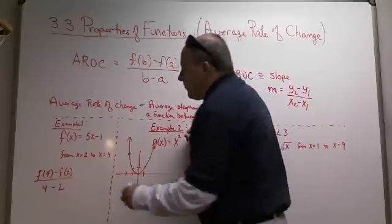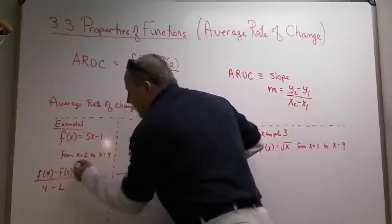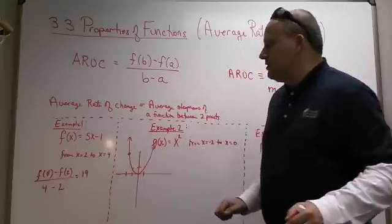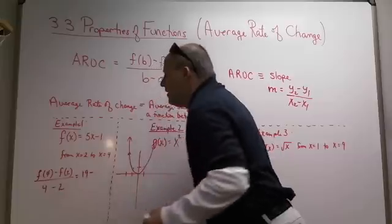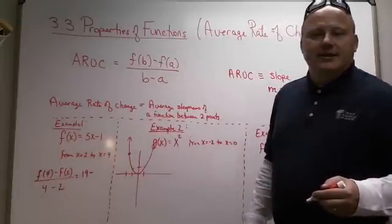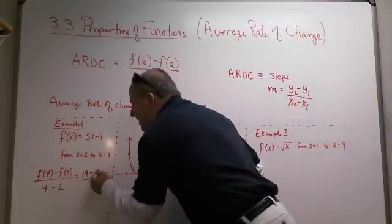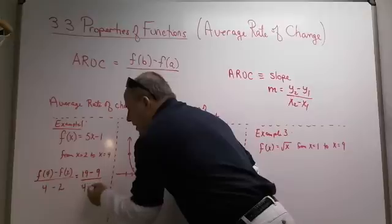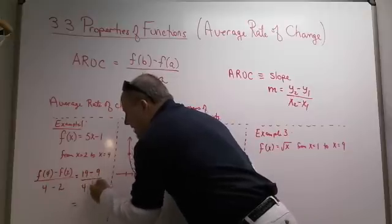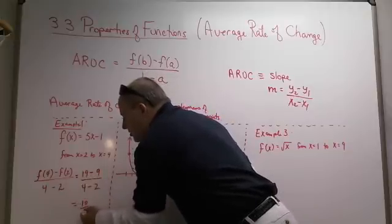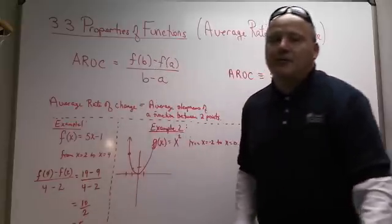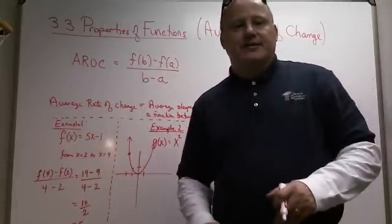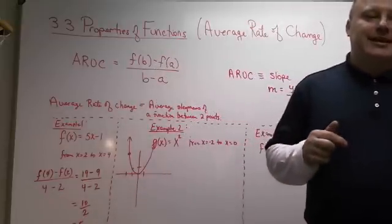So f(4) is actually 19. 5 times 4 is 20. And then 20 minus 1 is 19. Minus f(2). Well, 5 times 2 is 10. 10 minus 1 is 9. So it's 19 minus 9. And then 4 minus 2 on the bottom. Now 19 minus 9 is 10. 4 minus 2 is 2. 10 divided by 2 is 5. I'd have been really surprised if it wasn't 5. Because it's got to be 5 because it is a line.